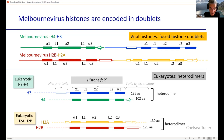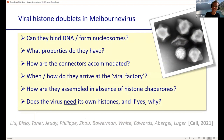We decided they're weird enough for a close look. Making them allowed us to ask: can they bind DNA? What structures do they form? How are the connectors accommodated? What do the connectors do? How do they get to the viral factory? How do they get assembled without chaperones? And most importantly — why on earth does this virus need its own histones, given that viruses usually aren't shy about appropriating proteins from their host?